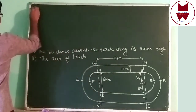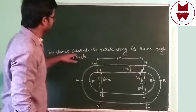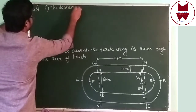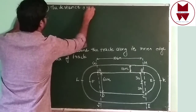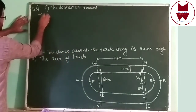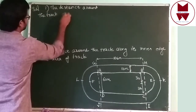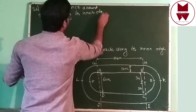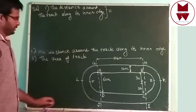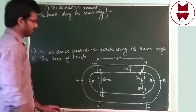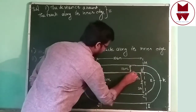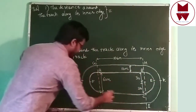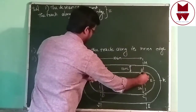First, Roman number 1: the distance around the truck along its inner edge. We have to find out the distance of the inner edge. This part only inside, up to here — this total length we have to find out. Only the inside part. From here to here is AB.